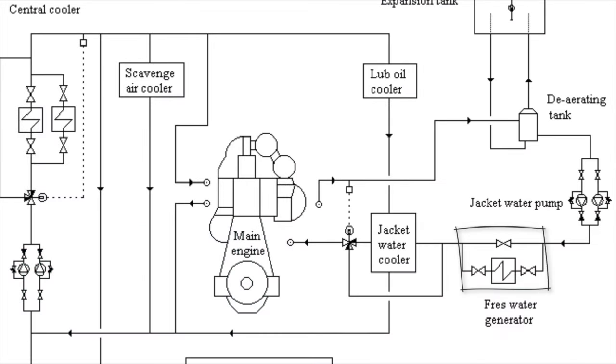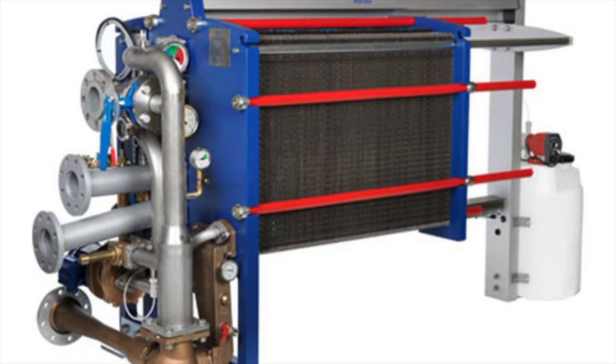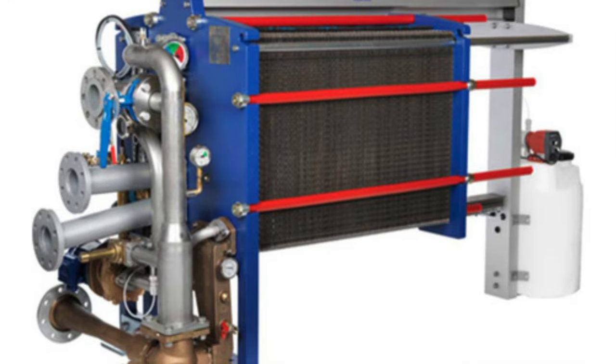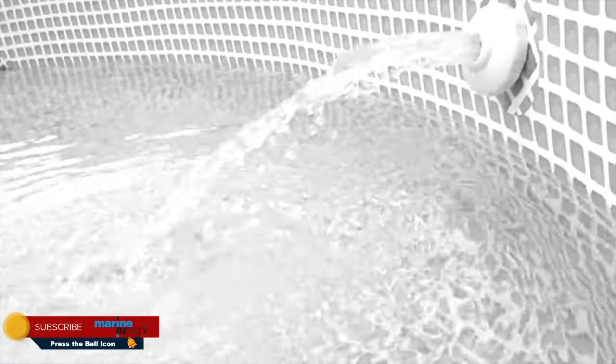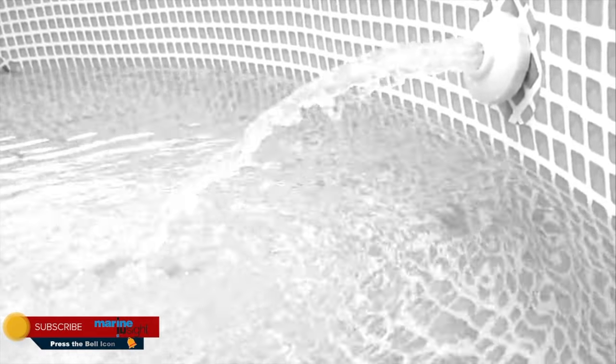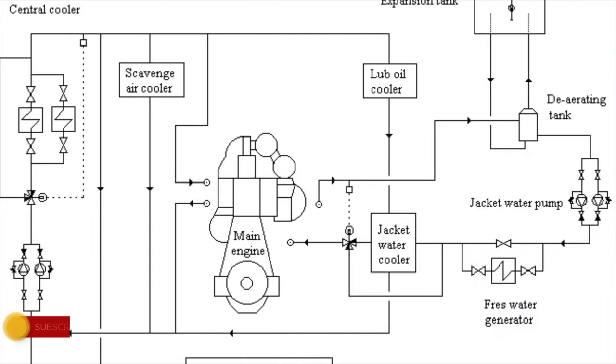A fresh water generator is incorporated in the jacket cooling water line to utilize the heat from the main engine to generate low salinity water in the fresh water generator. It is installed after the outlet of the jacket cooling water pump.